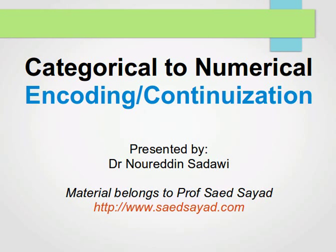Hello again. This time we're going to learn how we can convert categorical variables to numerical variables. This process is usually called encoding or continuization.